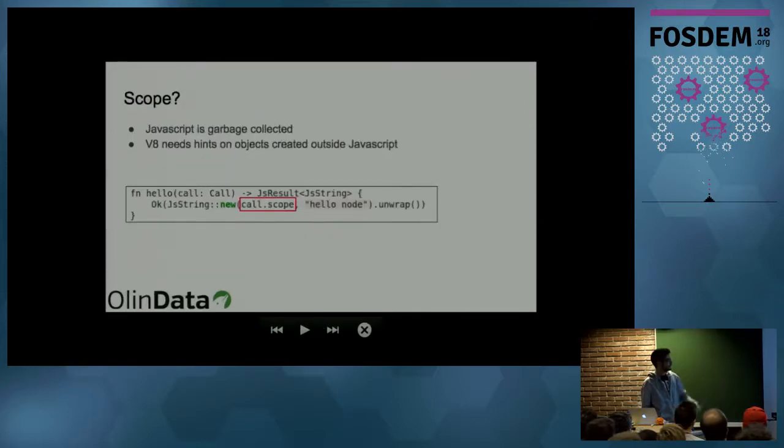So you saw this call.scope, and you're probably wondering what is that, why you have to pass it around. So JavaScript is a garbage collected language. And V8 wants to know where this object belongs to, and which function does it belong to. So if that function goes out of scope, it can garbage collect those values that were created there. So this call.scope is the way that you hint V8 that, for example, this string that we are creating, it belongs to the function that called it. So you have to pass around call.scope whenever you create new values.